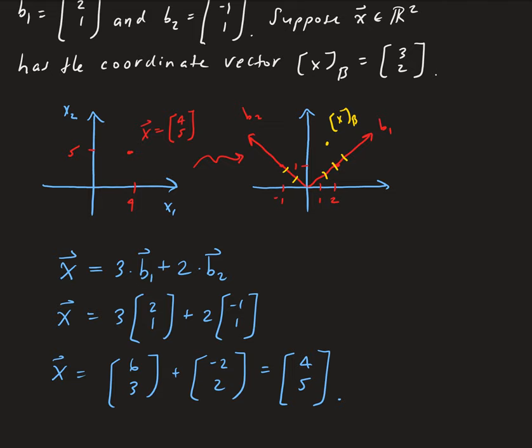So the vector x, in terms of the basis vectors, is equivalent to [4, 5] in terms of the standard basis, in terms of the standard basis vectors.